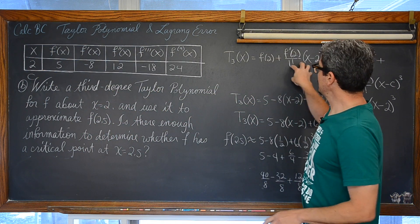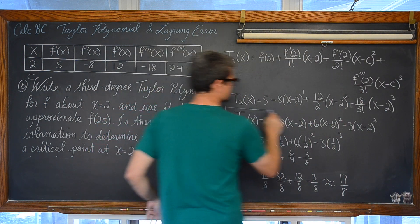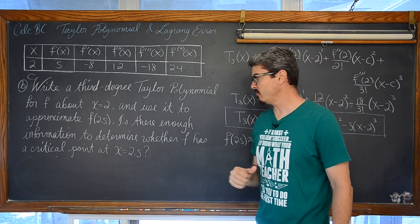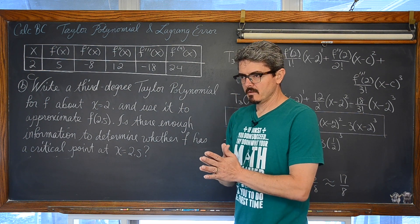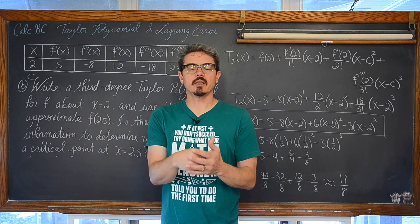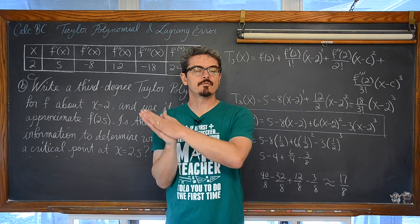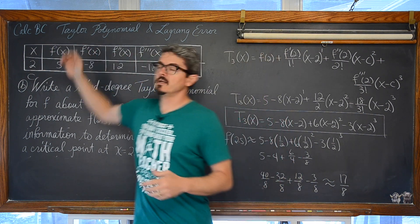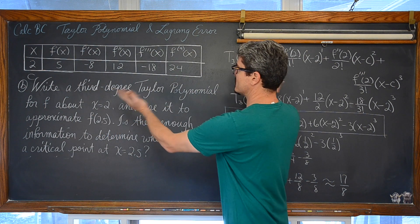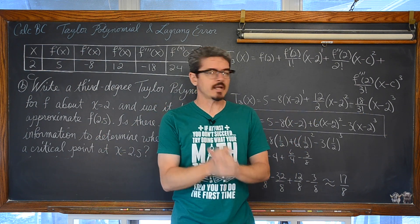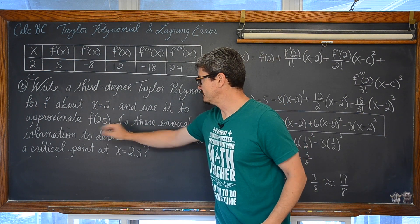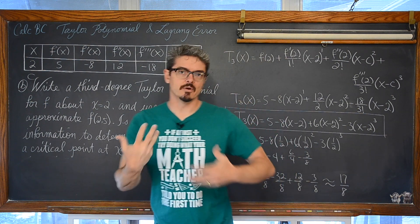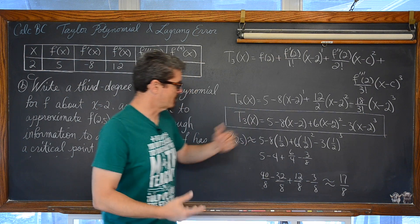Now can we use this Taylor polynomial to determine whether f has a critical point at 2.5? Your Taylor polynomial can give you exact values for a function if the Taylor series converges back to the original function within the interval of convergence, and we simply don't have that information. We don't have enough information to determine even what the interval of convergence is, so we don't have enough information to determine whether f has a critical value at 2.5 — that is, whether f prime of 2.5 equals zero or is undefined.